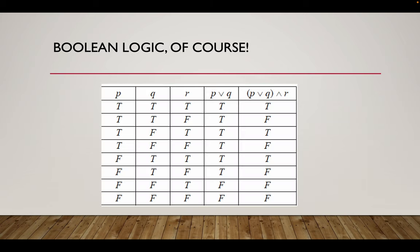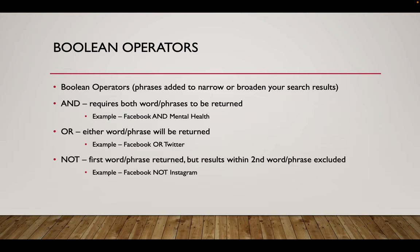Boolean operators let you combine key terms. If you use the AND Boolean operator, you're combining two terms — meaning both must appear in the source. So if you search Facebook AND mental health, it's going to look for sources with the word 'Facebook' and the words 'mental health.' That's super useful and will narrow down the number of results you get.